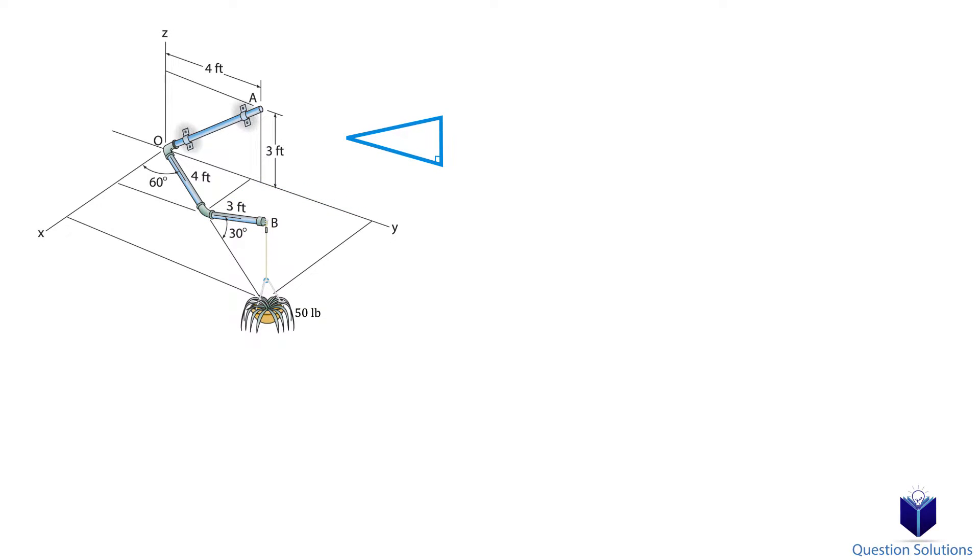We can figure out the sides of the triangle using sine and cosine functions. The sine component gives us the height which we will use for our k components, or in other words, the z length.